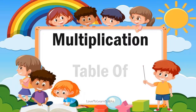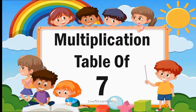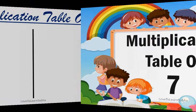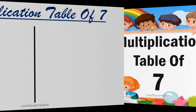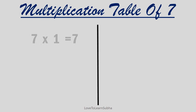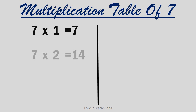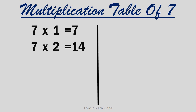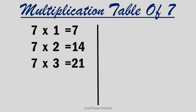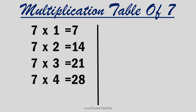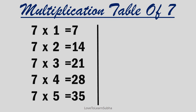Multiplication table of 7. 7 ones are 7, 7 twos are 14, 7 threes are 21, 7 fours are 28, 7 fives are 35.